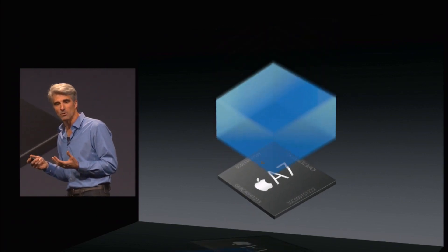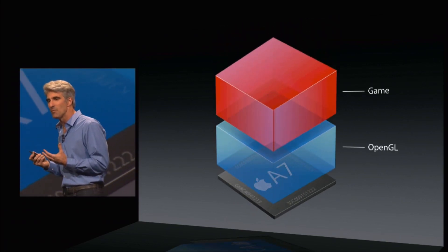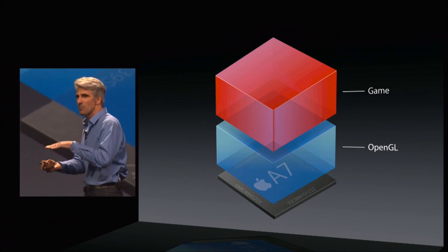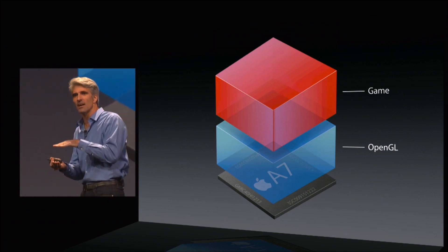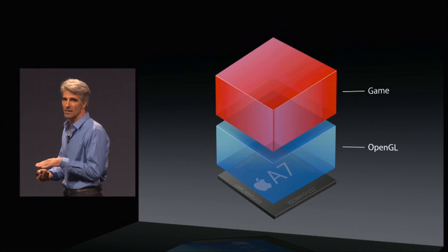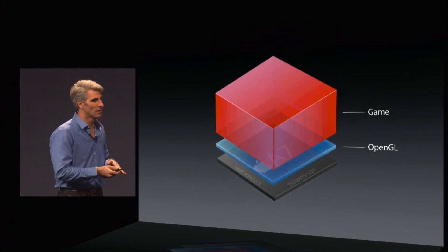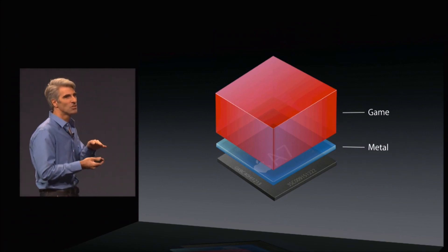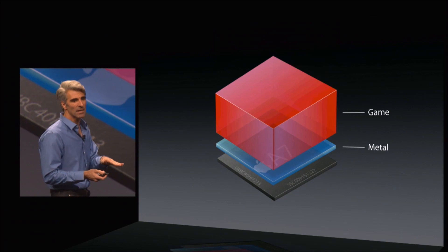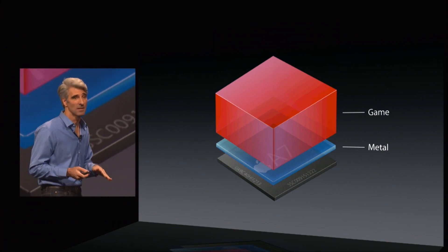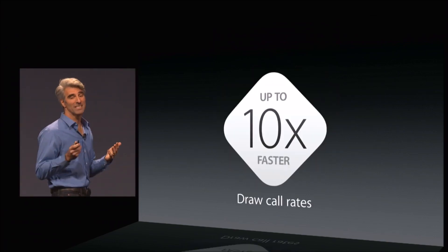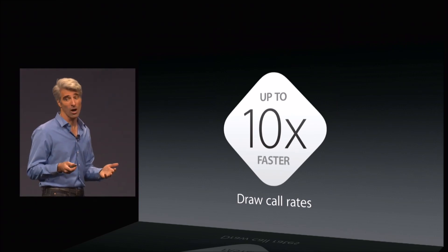But increasingly, if you look at what goes on in the performance of the game, in addition to what the game wants to accomplish, OpenGL ends up being a thick layer of overhead between the game and the hardware. Now we have Metal, and Metal dramatically reduces that overhead, giving the game near bare-to-the-Metal access to the power of A7. The results are stunning — up to 10x faster draw call rates.